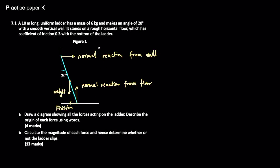That is all of the forces we need to consider — four forces, each labeled correctly. Part B is worth 13 marks. It says calculate the magnitude of each force and hence determine whether or not the ladder slips. Where I suggest you start is with the forces you know — we know what the weight should be because we're given the mass, so the weight will be mass times gravitational acceleration.